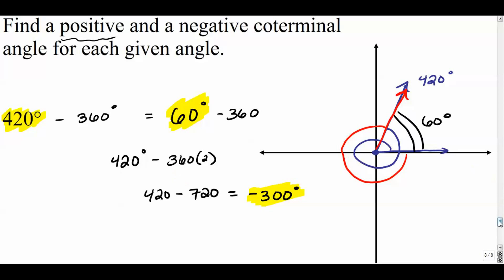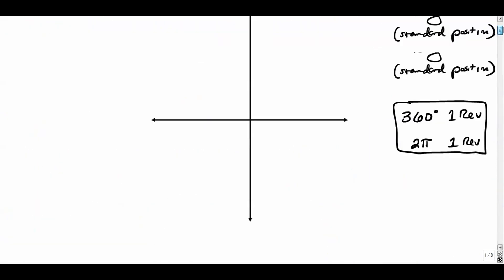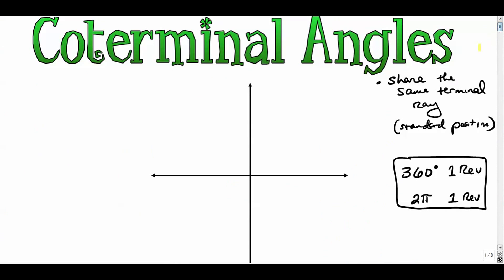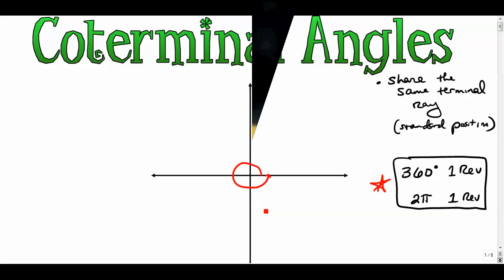That was a bit longer than expected, but finding coterminal angles is an important skill. It all comes back to the idea that 360 degrees and 2π radians represent one full revolution around a circle. Hope it helped — thank you for watching.